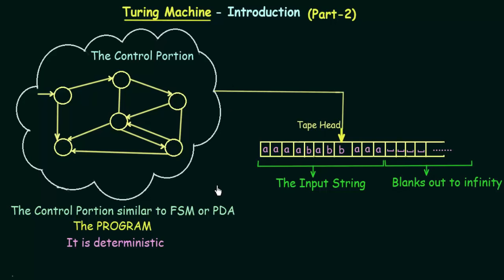Here I have a diagram which represents or shows how a Turing Machine actually looks like. We have a control portion and then we have the tape, which we have already discussed in the last lecture. The control portion is similar to the finite state machines or a push-down automata. This is the main controlling portion of the Turing Machine which takes care of how the control has to be handled. It is something similar to finite state machines or push-down automata, but it is not actually a finite state machine or a push-down automata.